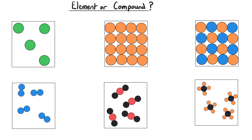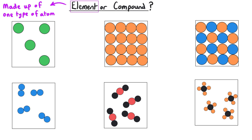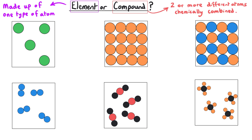A simple application of this skill might be to just state whether a particular substance is an element or a compound. You need to look at all the atoms present and decide whether they are all the same or whether there are different types. For instance, here all of the atoms are green; all of the atoms in this substance are orange; and all of the atoms in this one on the bottom left are all blue. So even though we might have different arrangements and different numbers of atoms, these three are all elements because all the atoms in each substance are identical.